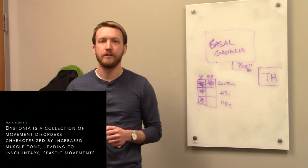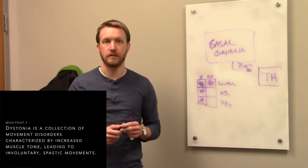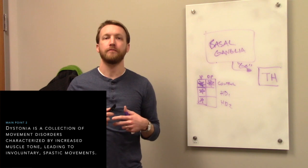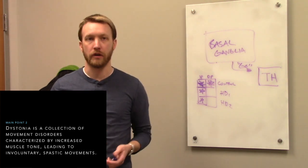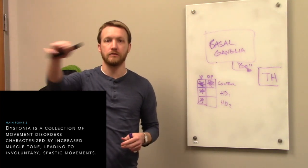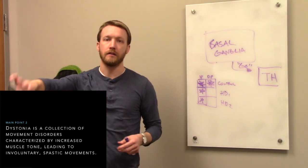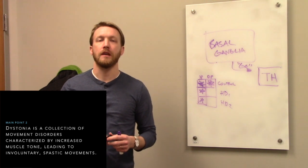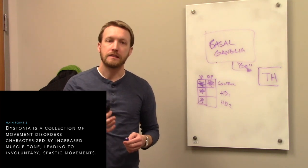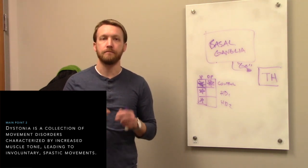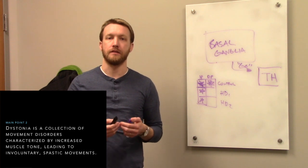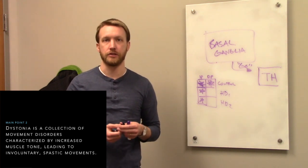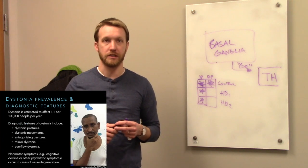Dystonia is kind of similar to Huntington's disease in that we have involuntary motor output. We have an abnormally high level of motor output, but rather than seeing those sort of dance-like choreic movements, instead we tend to see tonic movements or the body being locked in an uncomfortable involuntary position. It's much better to just see some examples.